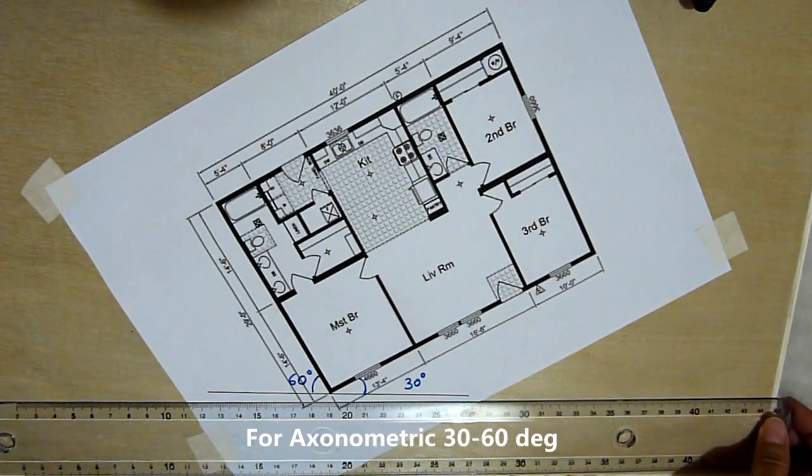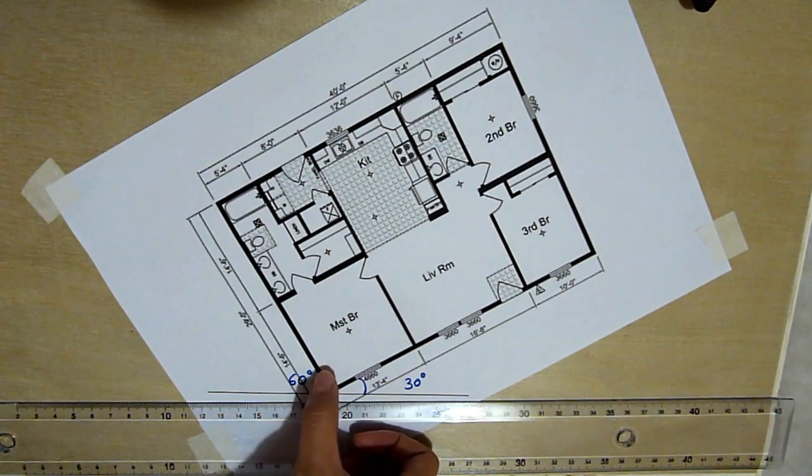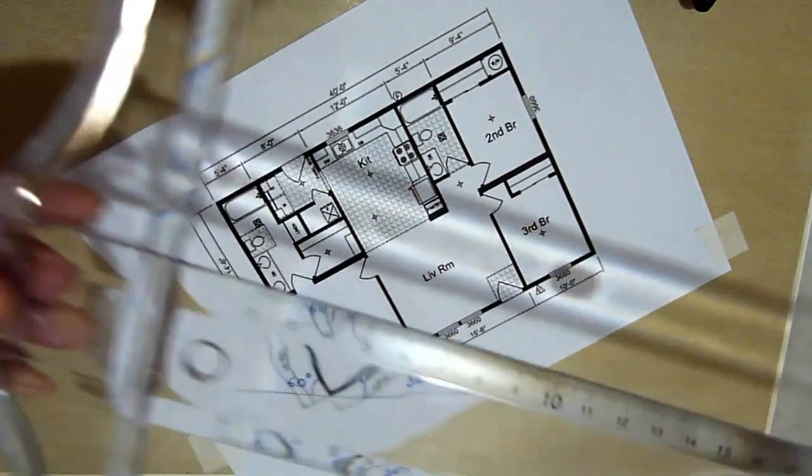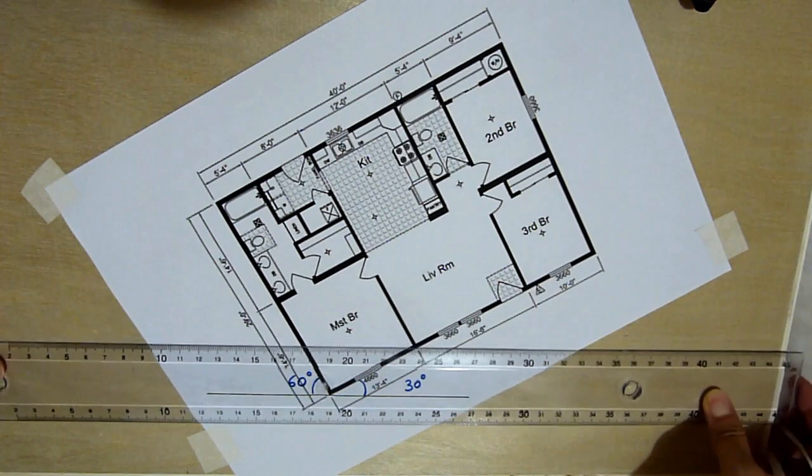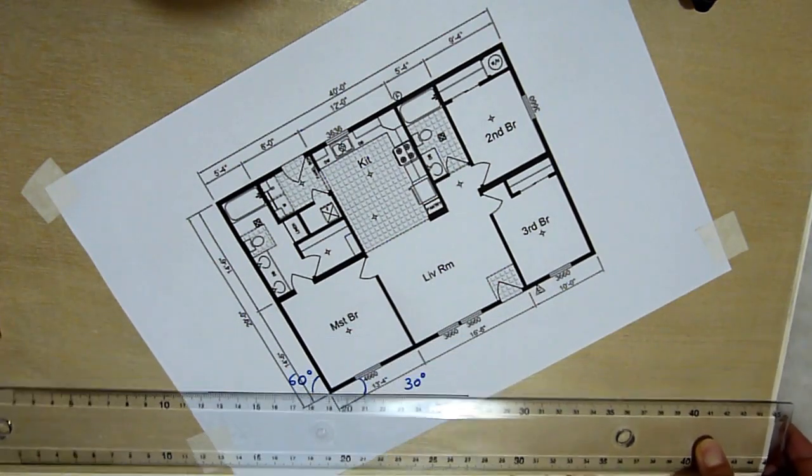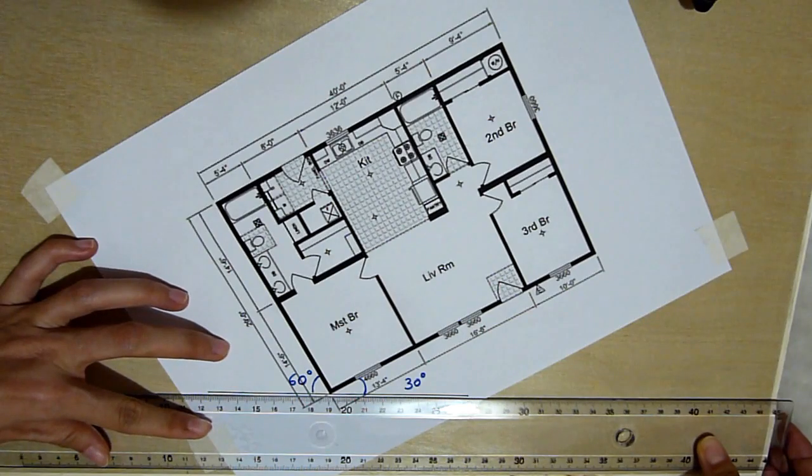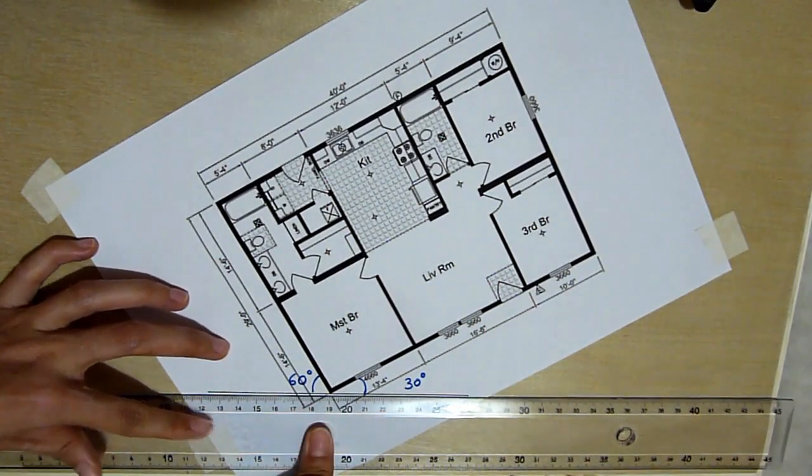So for this axonometric, this is a 30 degree and this is a 60 degree. Now to make sure you get this accurate, first you have to lay out your t-square on the board. Pull it down. And this will be your parallel horizontal reference to start measuring the degree that you are going to use.